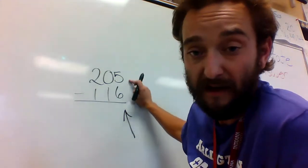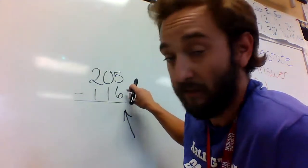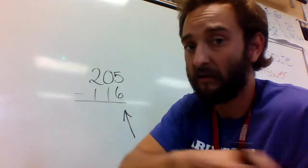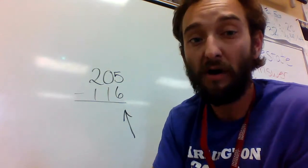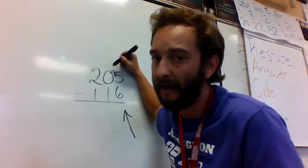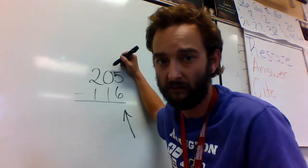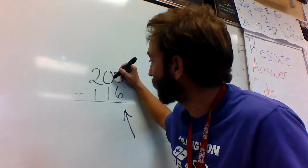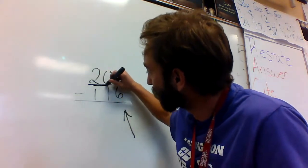So I have 5 minus 6. The bottom is larger than the top. That will not work, so I have to borrow. But look, when I go to my tens place, I have a 0. I can't take anything from 0. So instead of looking at just 0, I'm going to look at this whole 20.